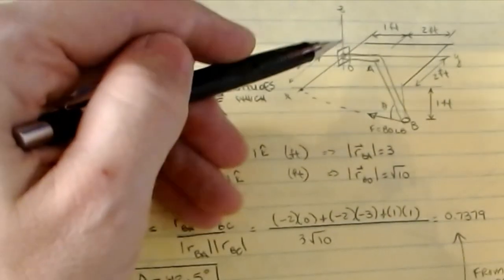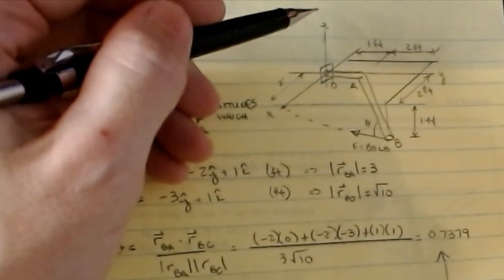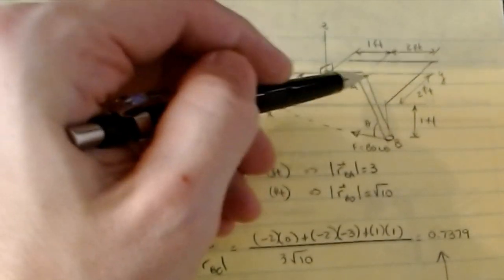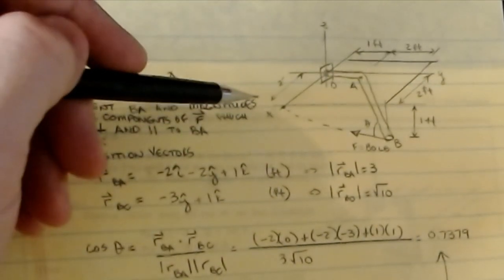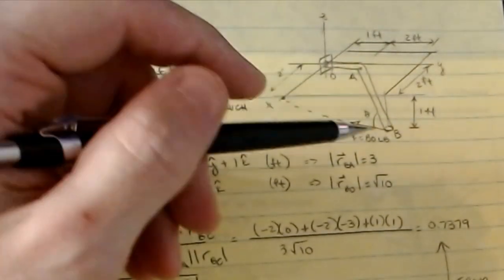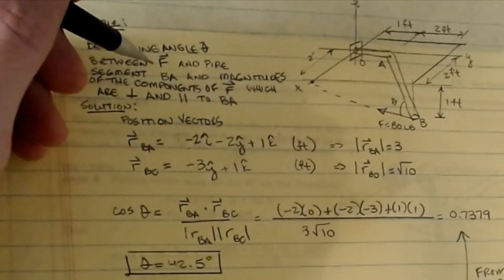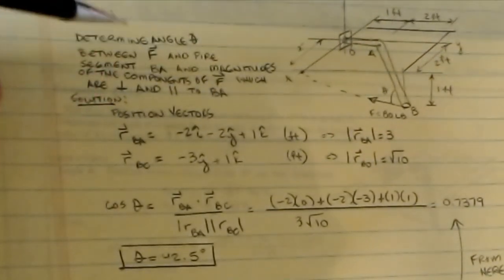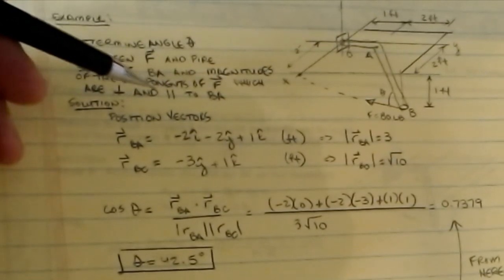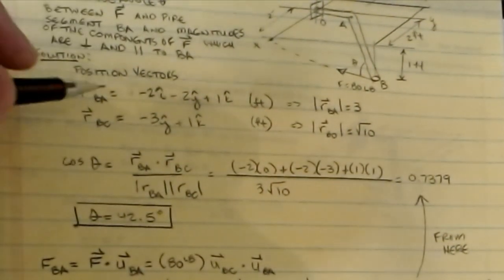Let's work through an example. We have a three-dimensional pipe assembly: the x-axis, y-axis to the right, and z-axis positive up. There's a straight length of pipe for one foot, then two feet in the y-direction, then it comes down one foot while also going two feet in the x-direction — so it's out in space. We pull on the end of this pipe with a force of magnitude 80 pounds. We want to find: first, the angle between F and the pipe; second, the magnitudes of the components of F both parallel and perpendicular to BA.